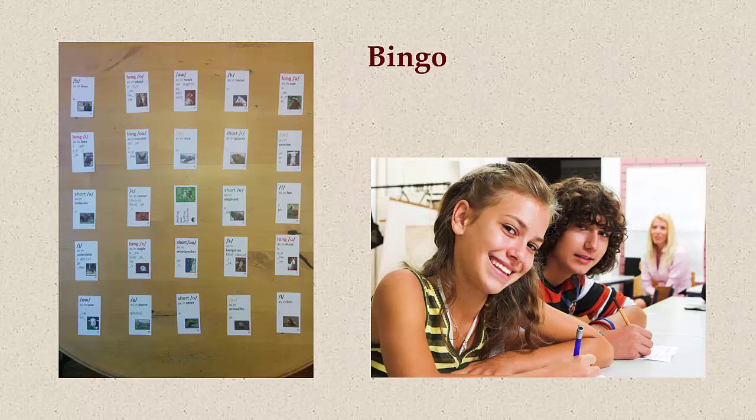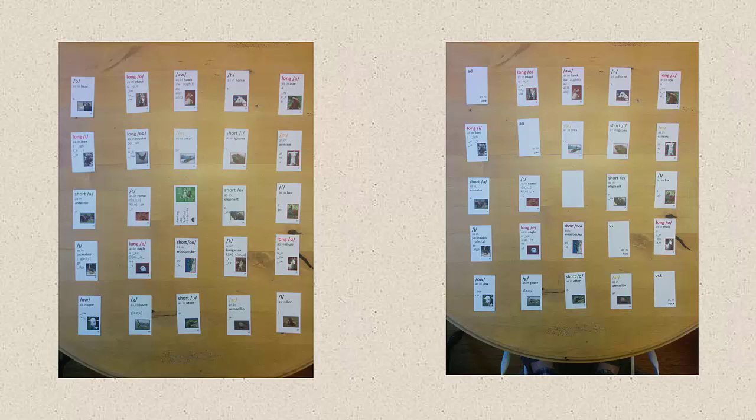The teacher says the animal name and the students turn over the card. The first 5 in a row horizontally, vertically, or diagonally wins. Feel free to use a bonus card, as in the example.